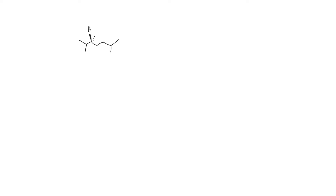Let's get some more practice assigning R or S configuration. We can look at this molecule and pick out just one chirality center. It has the wedge and dash on it. It won't always have a wedge and dash, but if we want to assign R or S we need to have that three-dimensional information.